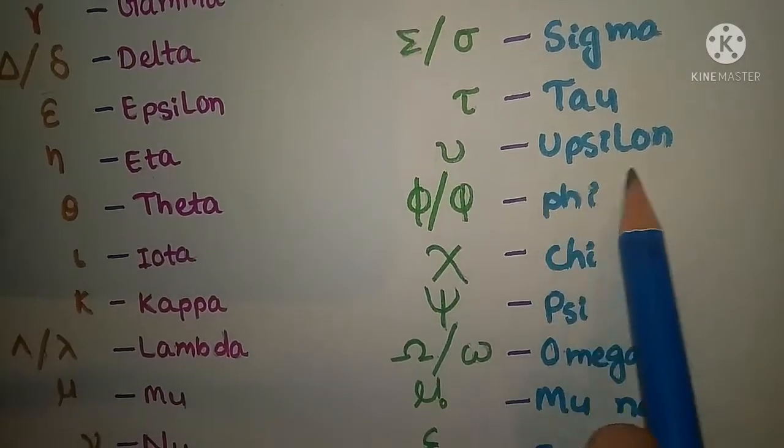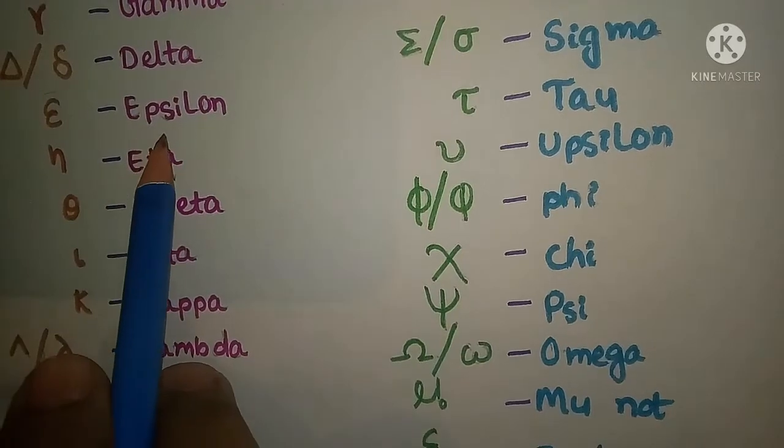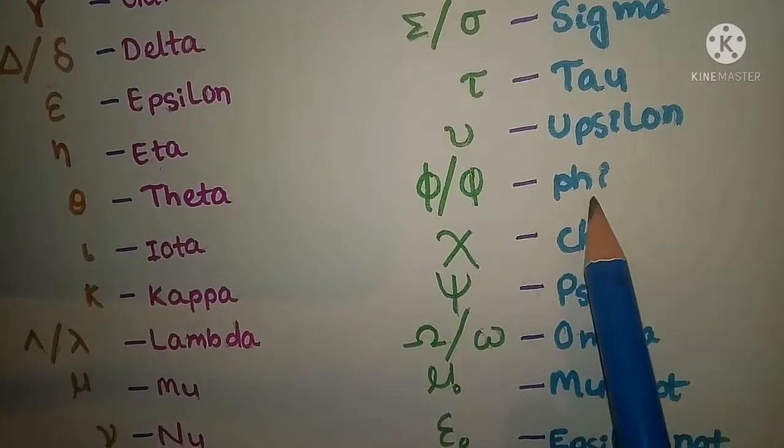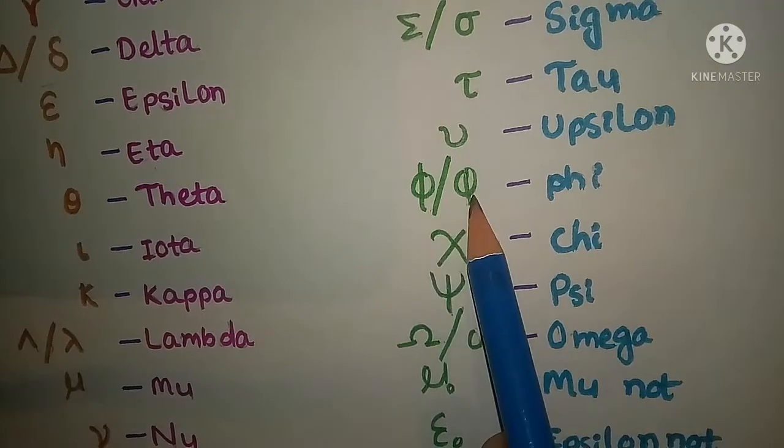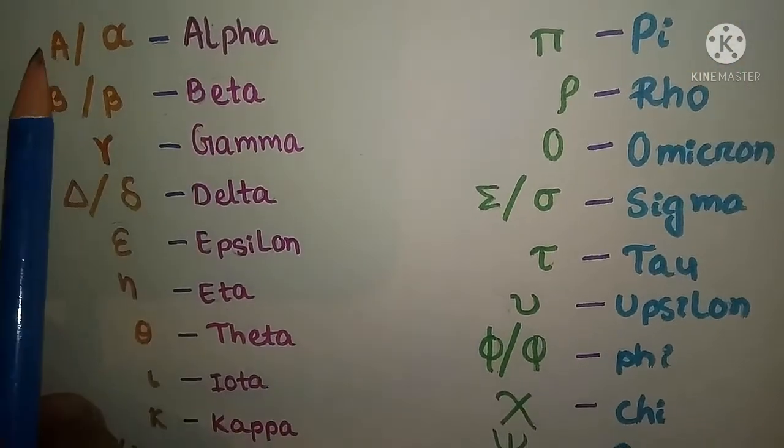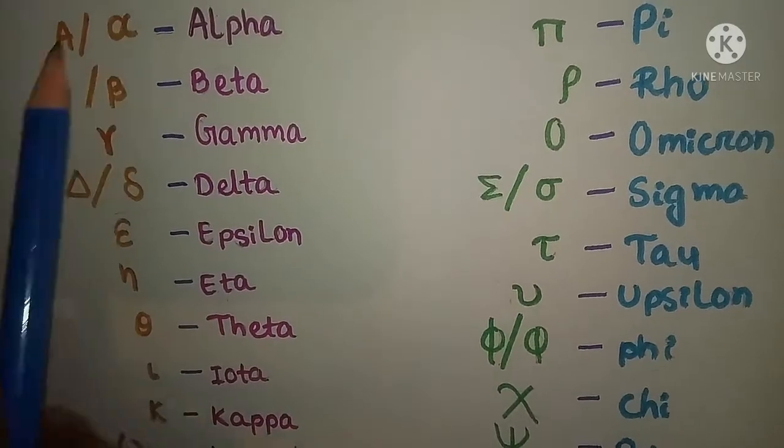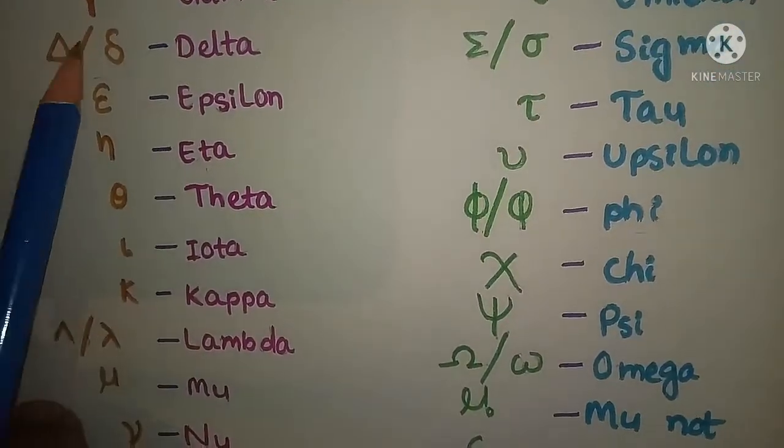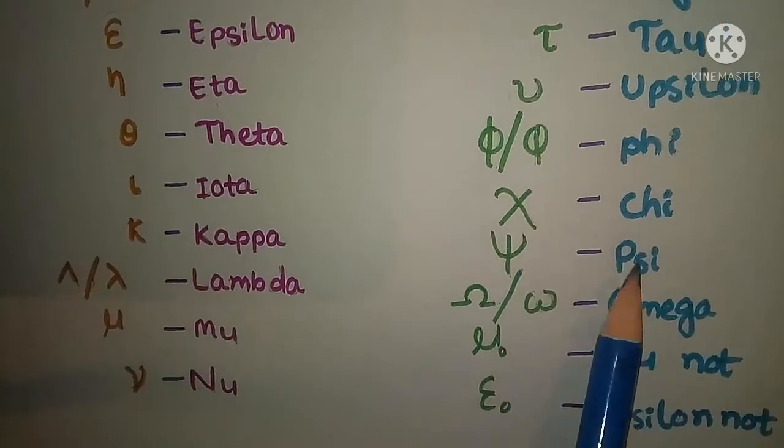This is epsilon and this is also epsilon. This is xi capital and small. Alpha has capital and small versions, capital and small.